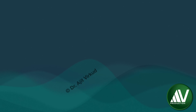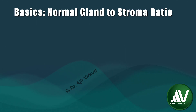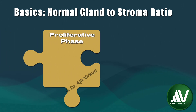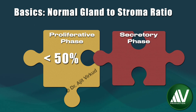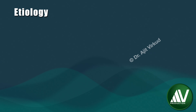For understanding this definition, one needs to know what is normal gland-to-stroma ratio, and for that we need to go back to basics. In the proliferative phase, the gland-to-stroma ratio is less than 50%. In the secretory phase, however, the gland-to-stroma ratio increases to more than 50%.